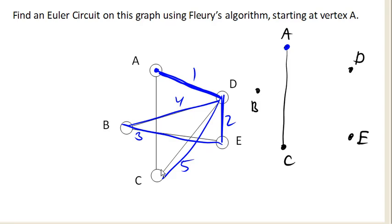Now, depending upon how we had made our original choices at the beginning, we may have ended up with different Euler circuits.